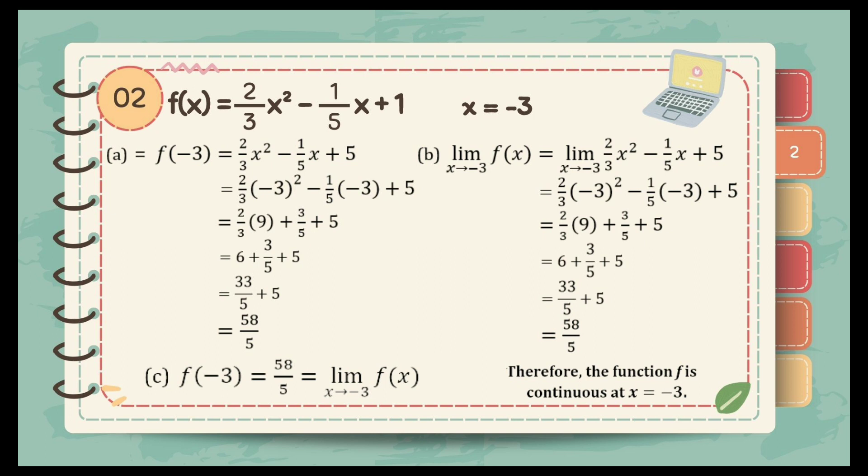Then 33 over 5 plus 5 equals 58 over 5. For finding the limit, we can just do the direct substitution and we get the same answer 58 over 5 as the limit of the function. Since it satisfied all the conditions, therefore the function is continuous at x is equal to negative 3.